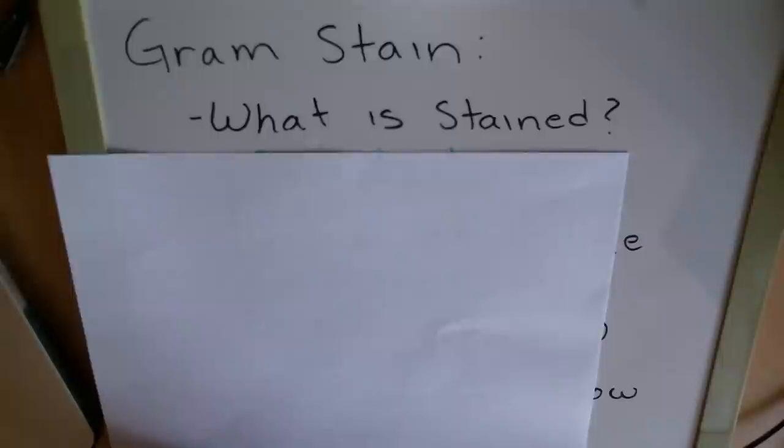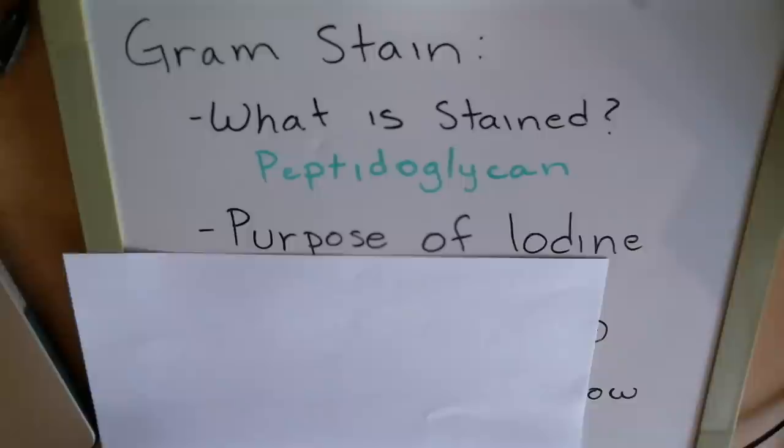So with your gram stain, you'll be asked what was stained, and you'll say the peptidoglycan — that's what's taking up all the dyes. And what's the purpose of iodine? Iodine is the mordant, and the mordant increases the affinity of the primary stain so that when you use the decolorizer, it's less effective.